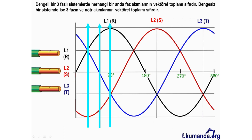3 fazlı sistemlerde: dengeli 3 fazlı sistemlerde herhangi bir anda faz akımlarının vektörel toplamı sıfırdır. Dengesiz sistemde ise 3 faz ve nötr akımlarının vektörel toplamı sıfırdır. Eğer bir toprak kaçağı oluşursa bu denge bozulur, fark akımı oluşur ve bu fark akımı da toroid nüvesi üzerinde manyetik alan oluşturur. Oluşan hata akımlarında RCD açma yaparak koruma sağlar.